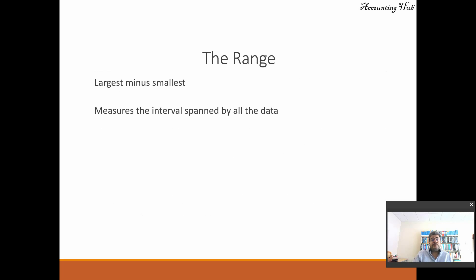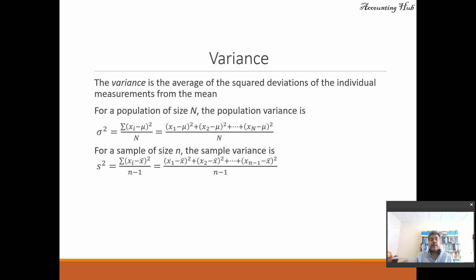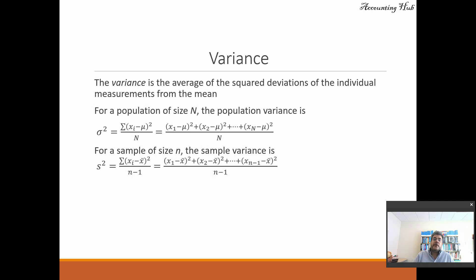So the range — largest minus the smallest — measures the interval spanned by all the data. Variance is the average of squared deviations of the individual measures from the mean: individual measure minus the mean, squared, and the sum divided by the number of the population.